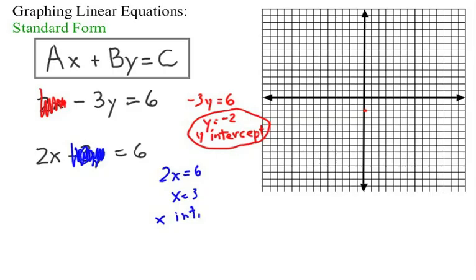So, now the x intercept is positive 3. So, on our graph, we're going to locate, out on the x axis, 3 positive. And, it is going to be right there. Now, we just have to connect the lines. And we will have our graph.